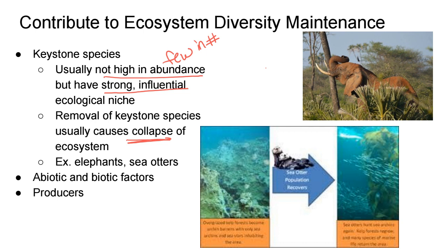We'll look at two examples: elephants and sea otters. Elephants knock down small trees, which opens up the grasslands and allows shrubs to remain. Their dung provides nourishment for plants and helps spread seeds. So these organisms, even though few in number, are helping maintain the land for other herbivores.